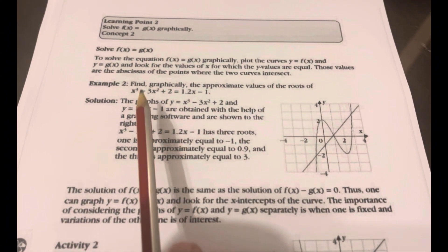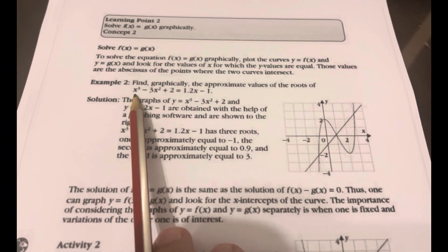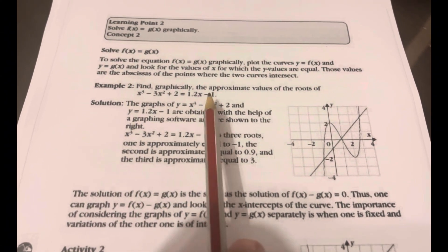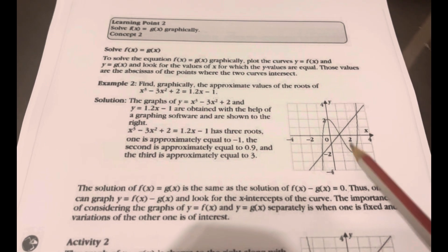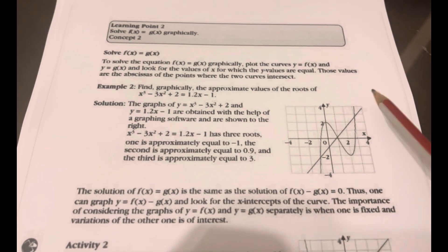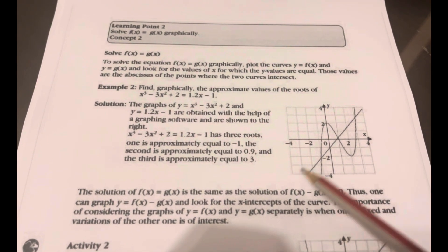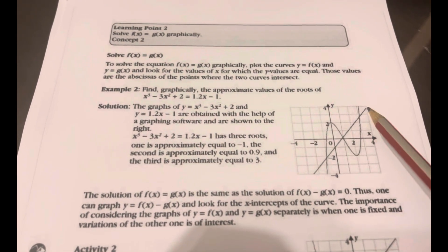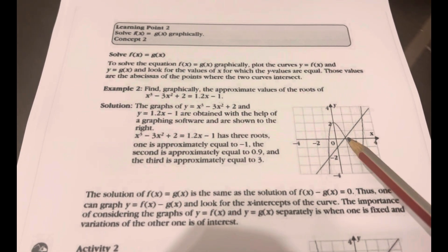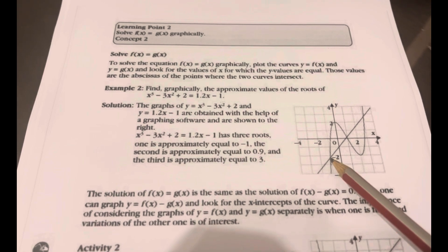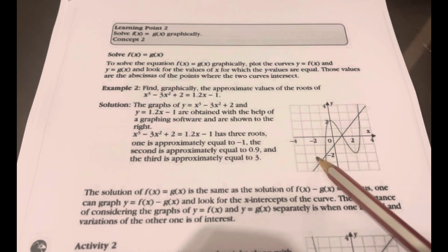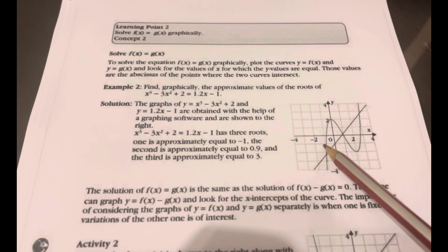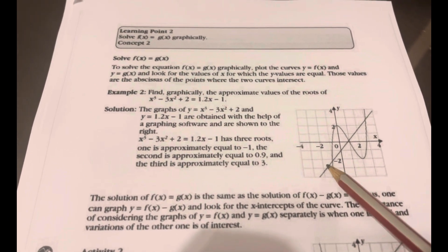For example, he gives one cubic equation and one linear equation and draws both. This is the cubic equation and this is the linear one. They intersect in three points, so your solution is those three intersection points.